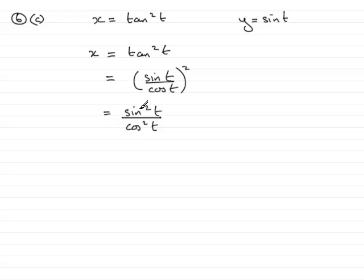So I've got sin²t, that's looking good because sin t is y, so the numerator is y². But cos²t, how does that connect to this up here?